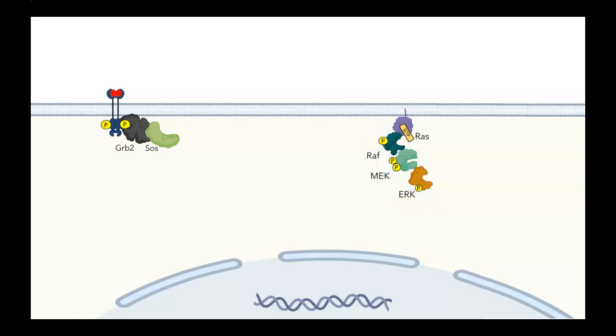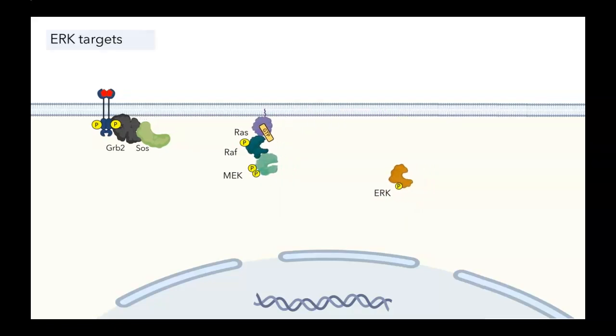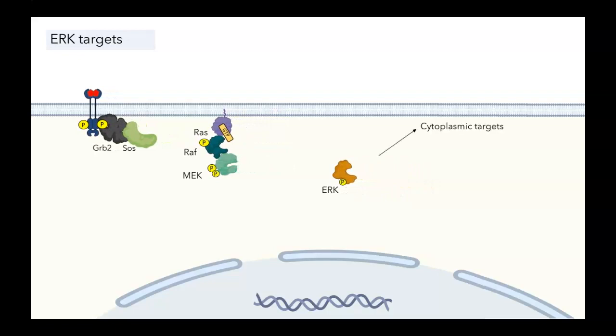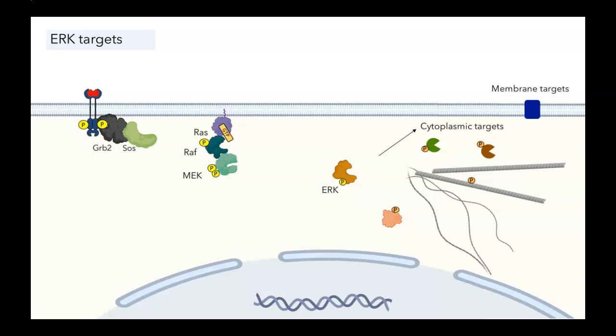Let's look at some downstream events. There are a lot of targets for the activated ERK. ERK can phosphorylate a variety of proteins. There are cytoplasmic targets like other enzymes, other kinases, cytoskeletal elements, and regulators of apoptosis. There are also membrane targets like receptors and transporters that can be phosphorylated by ERK. Activated ERK can also translocate into the nucleus where there are nuclear targets. There are transcription factors which can be phosphorylated by ERK, leading to gene expression. Notably, this pathway is involved in cell growth and proliferation, and some of the genes that get activated are cell cycle regulators that will allow a cell to enter mitosis and replicate.